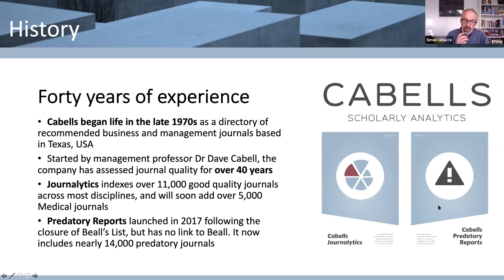They also have a relatively new product called Predatory Reports, which is a large database of nearly 14,000 journals — about to go over that 14,000 journal mark. When they launched the database in 2017, it was only 4,000 journals, so as you can see, it's grown quite rapidly. And they still have many more journals to review, so lots more work to do still.